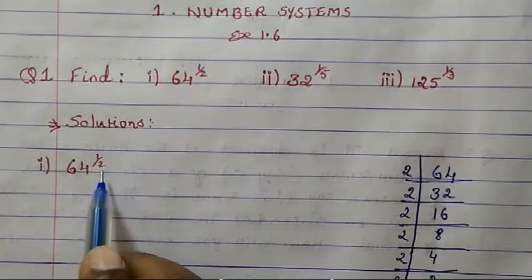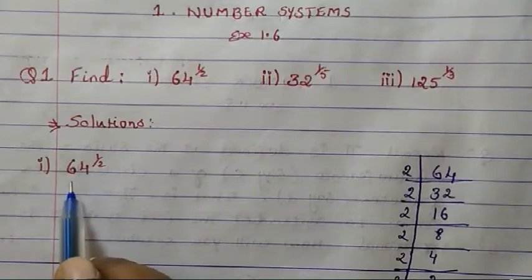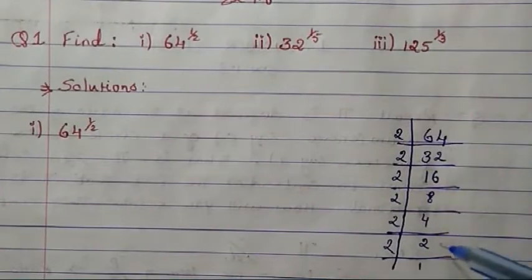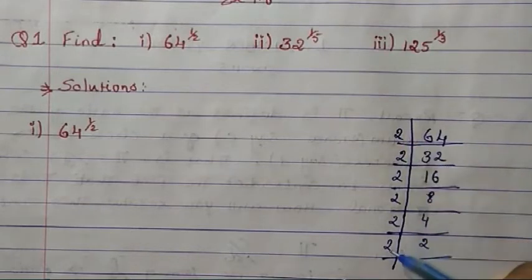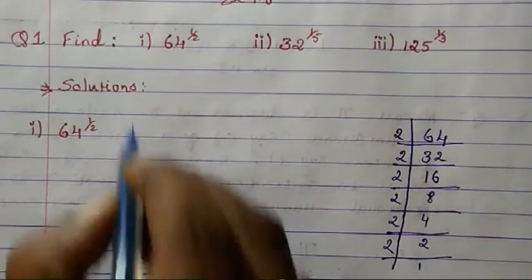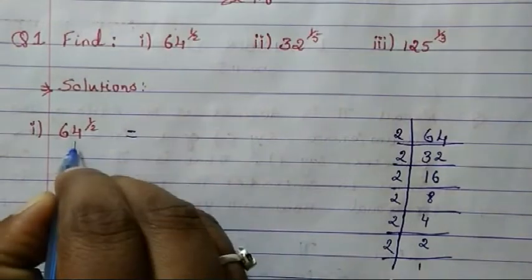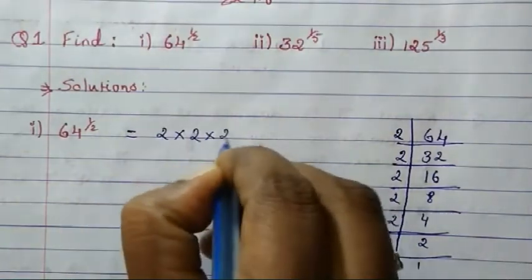For 64^(1/2), first we'll find the prime factors for the number 64. I've already done the prime factorization here. After doing prime factorization, let us write down all the factors.